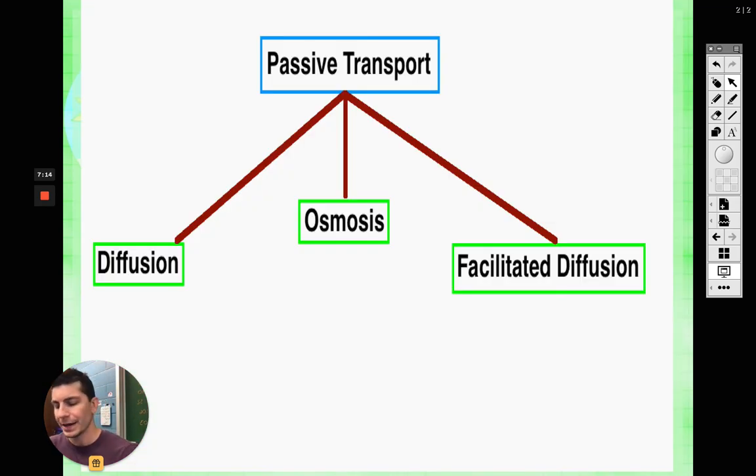The opposite is going to be active transport. Active is going to require energy, so we need energy for it to take place. So we're going to begin with passive transport, guys. There are three different forms of passive transport. We're going to go through all three of them. We're going to start off with diffusion, then go to osmosis, and lastly facilitated diffusion.